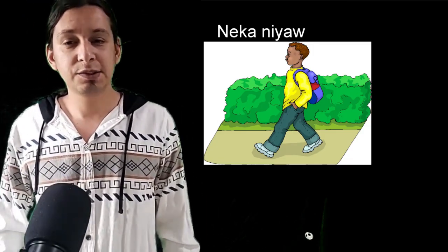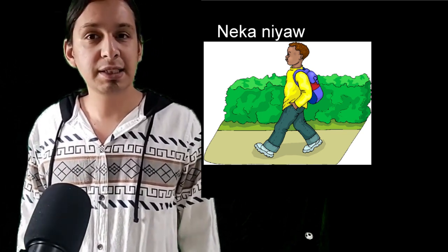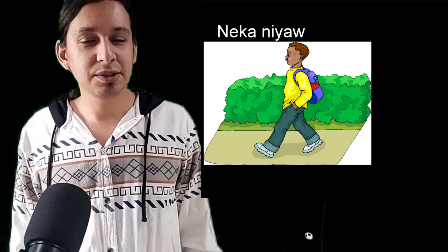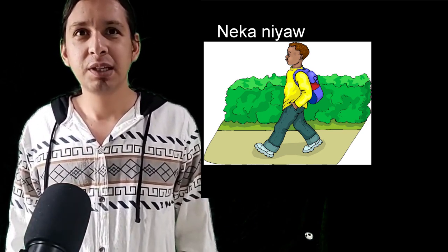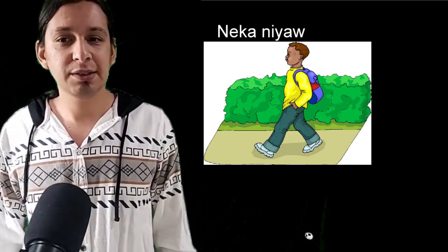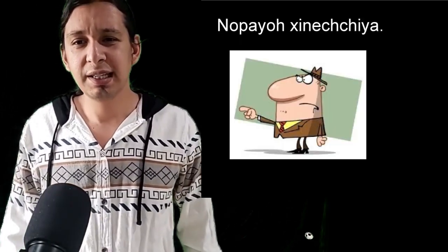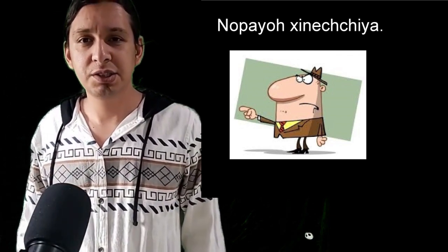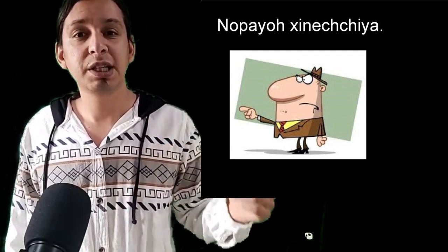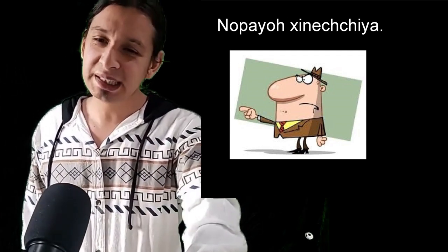Here's a big greeting tradition in the Huasteca. When walking around and elders see you, the traditional thing is to tell them what you're doing — that's the greeting. You don't say 'hi' or 'good morning.' You say, for example, neka niya — 'I'm going over there.' It's almost like making yourself seem less suspicious, and it's common around different parts of Mexico. This guy is saying nopayo shinechiya — 'wait for me over there.' The word order is different from English.